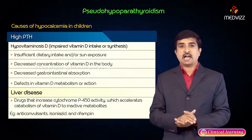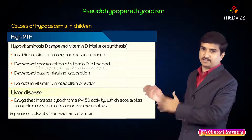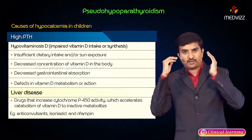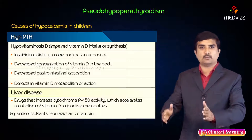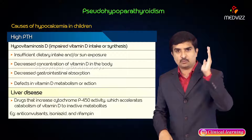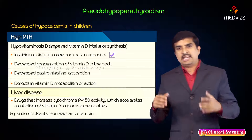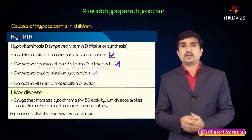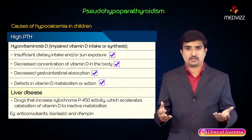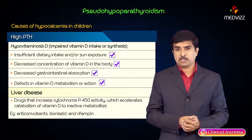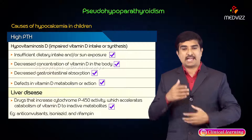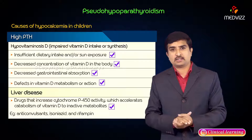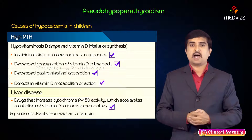High PTH is associated with hypovitaminosis D from impaired vitamin D intake or synthesis. Decreased vitamin D causes hypocalcemia, which stimulates the parathyroid gland to secrete PTH, leading to hyperparathyroidism. Causes include insufficient dietary intake, insufficient sun exposure, decreased gastrointestinal absorption, defects in vitamin D metabolism, and liver disease. Drugs that increase cytochrome P450 activity — such as anticonvulsants, isoniazid, and rifampin — accelerate catabolism of vitamin D to inactive metabolites, causing vitamin D deficiency and secondary hyperparathyroidism.